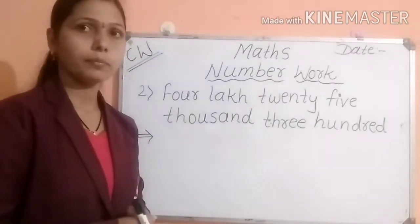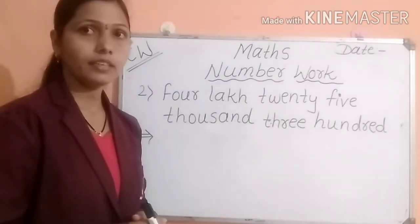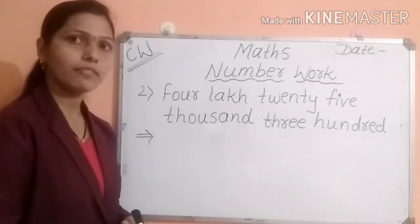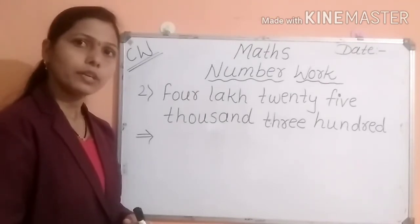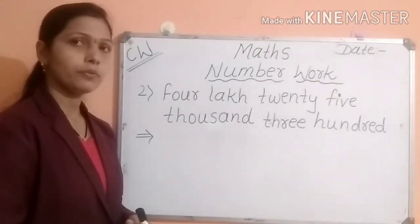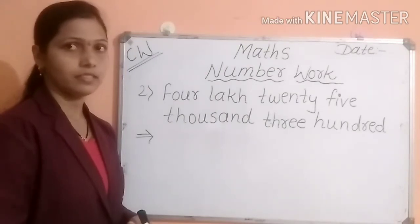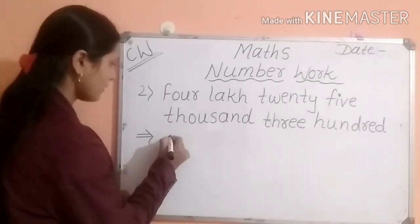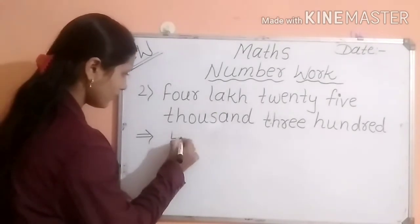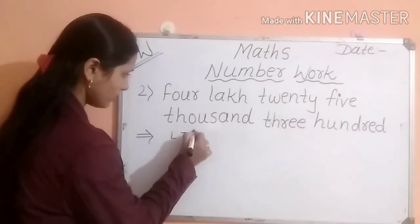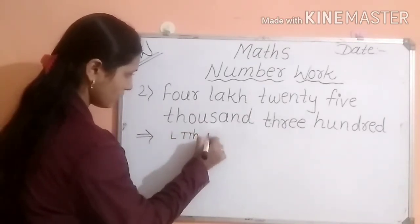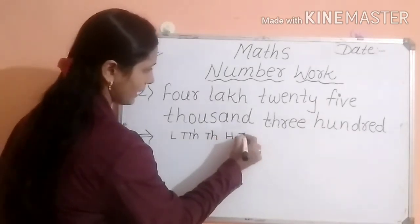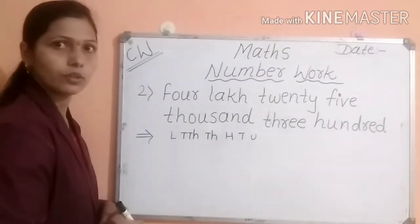That is four lakh twenty-five thousand three hundred. This number we have to write in figure. So how to write this number in figure? Let us start from the places. Which places are there? For a six-digit number, the first place is the lakh place. So here: lakh, ten thousand, thousand, hundred, tens, units.